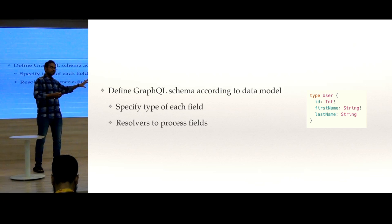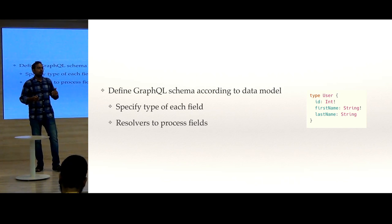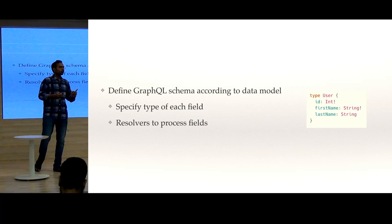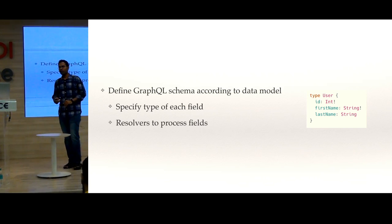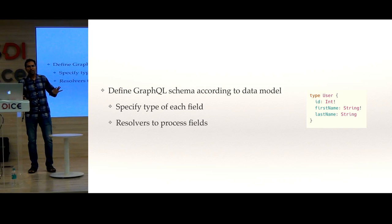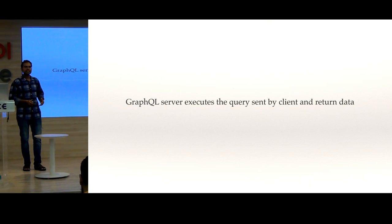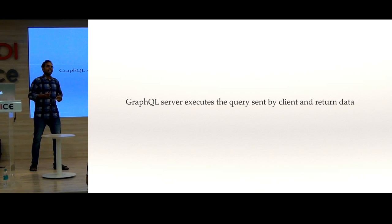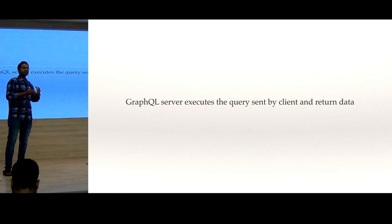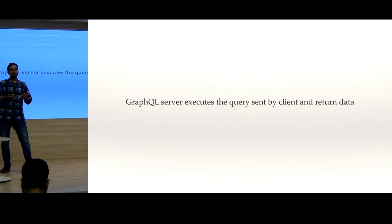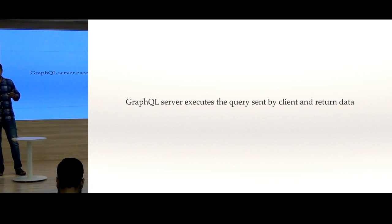That's the types part, and the second part is resolvers. In the resolvers, we write logic for how to compute these properties. Once you have that, you pass this schema to a server, and what this server does is: it gets the query from the client, calculates the response based on the query, and returns the data.